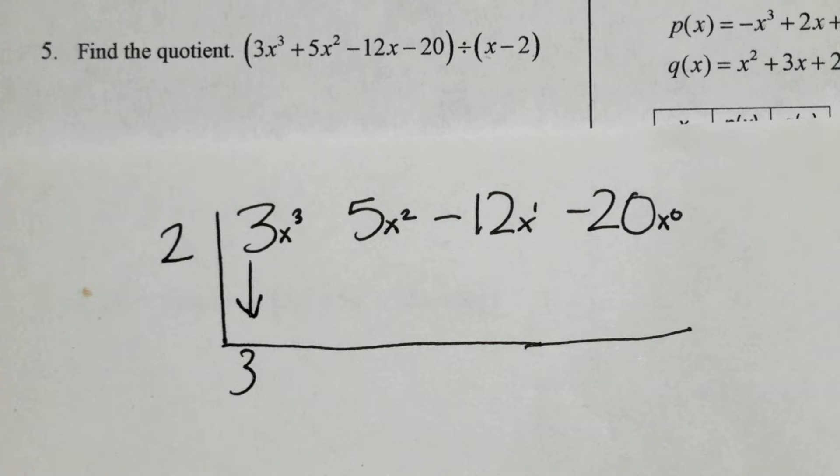Always remember we bring down the first number before we start synthetic division. Again, I personally call it the Mahler method because it's multiply, add, multiply, add. And everything we multiply comes back to this outside number.